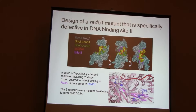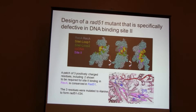These binding sites are spatially distinct from a lower-affinity DNA binding site identified by Shibata's group, composed of positively charged residues. When we looked at this in the crystal structure we realized the patch consisted of three positively charged residues, and we could align this with the Rad51 crystal structure and find a patch in the same three-dimensional space. So we mutated these three residues to alanine — removing the positive charges — with the idea that you could still form filaments but eliminate enzymatic activity.